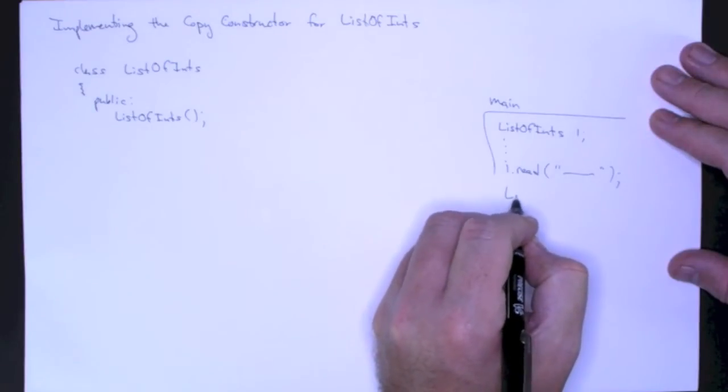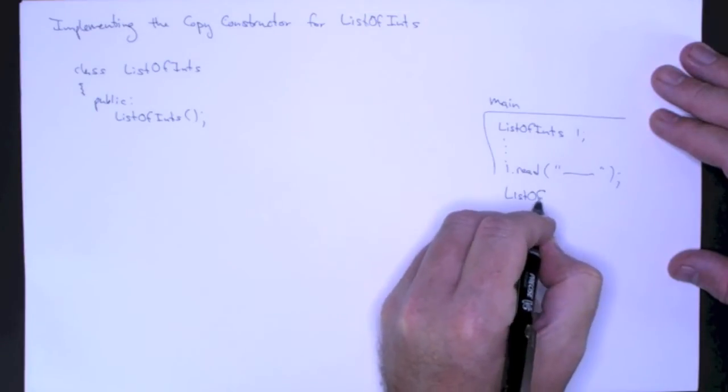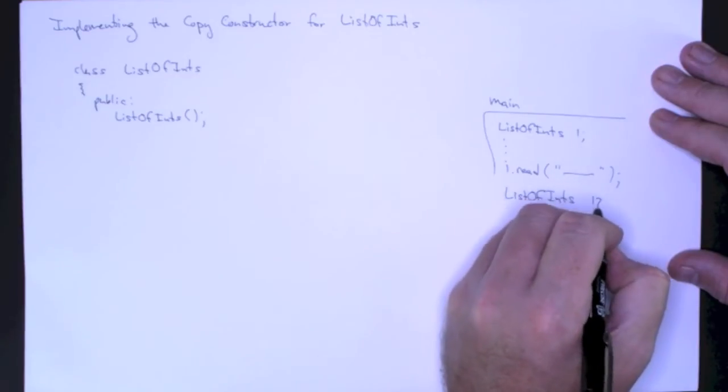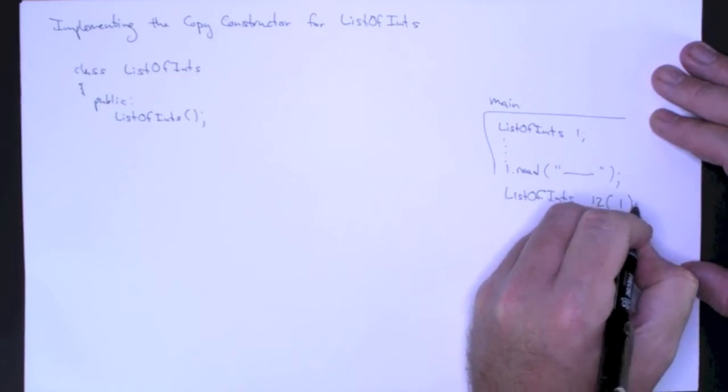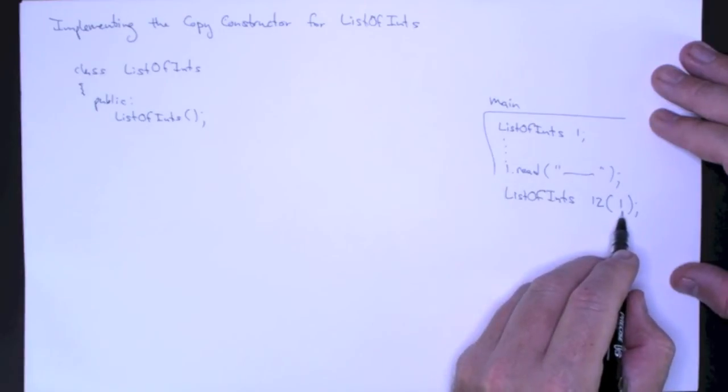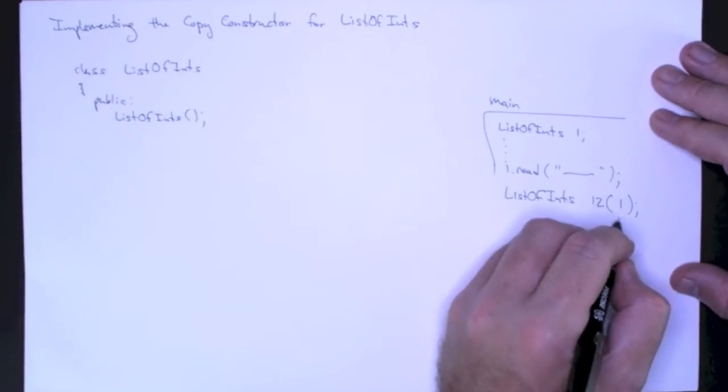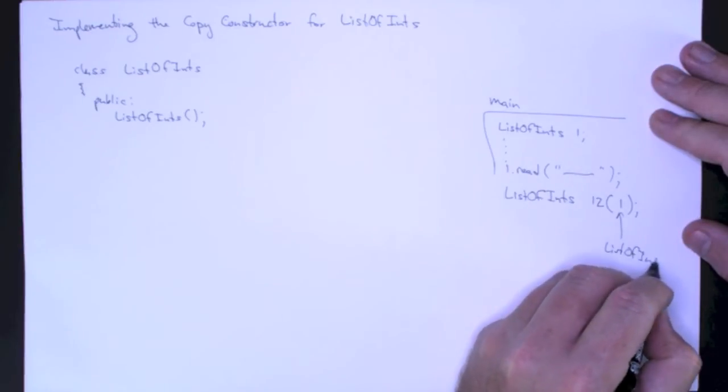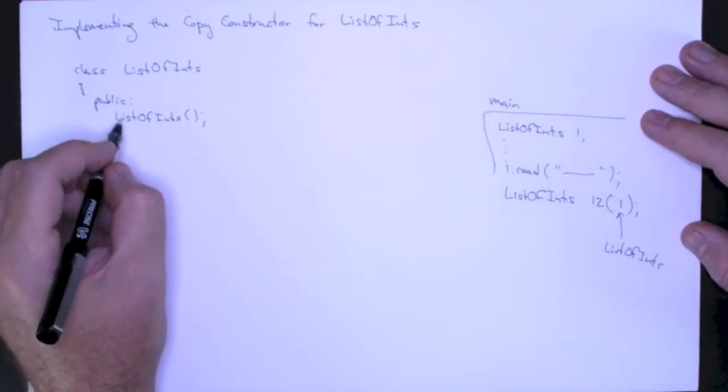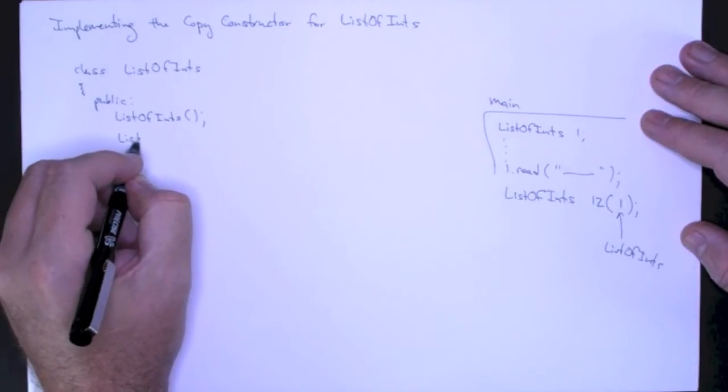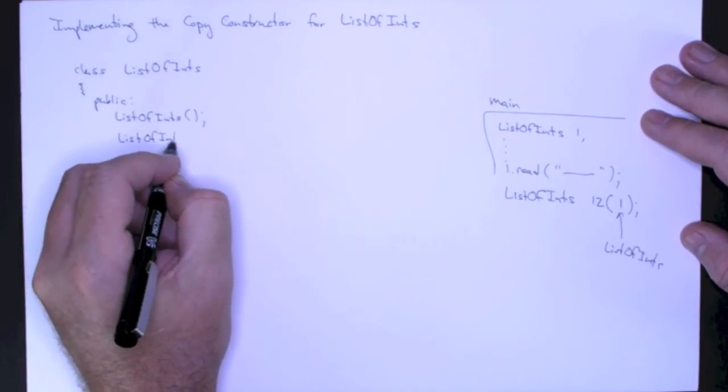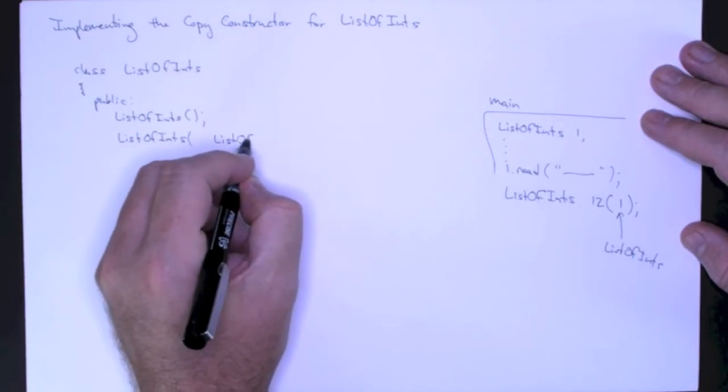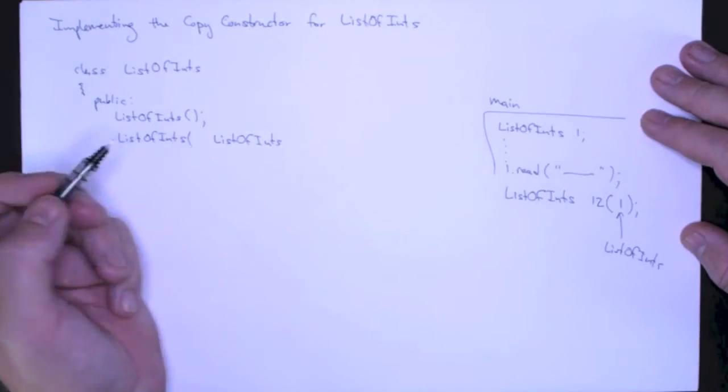I would do something like this: list of ints, let's say it's l2, and I pass in l as the parameter. This is a list of ints object. So the declaration of my copy constructor is a list of ints object.